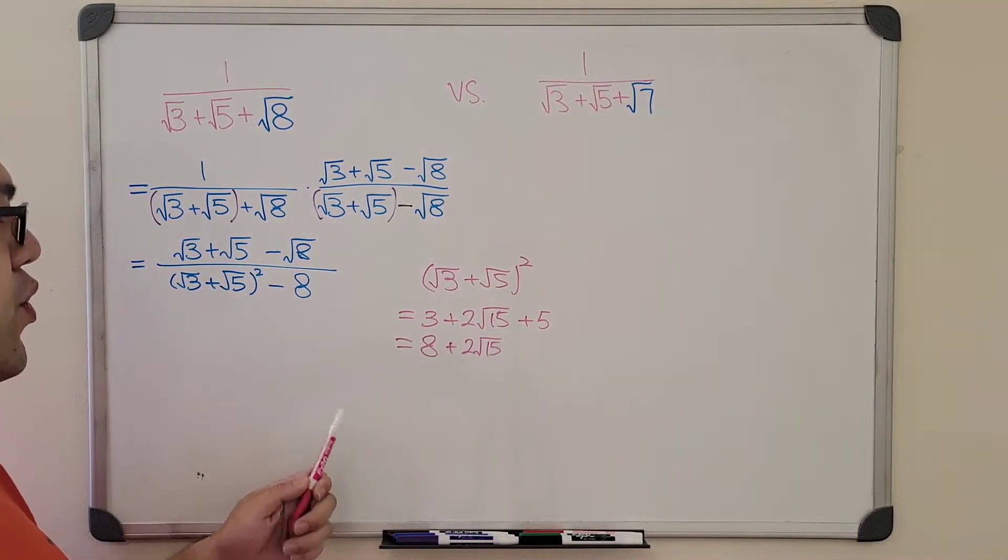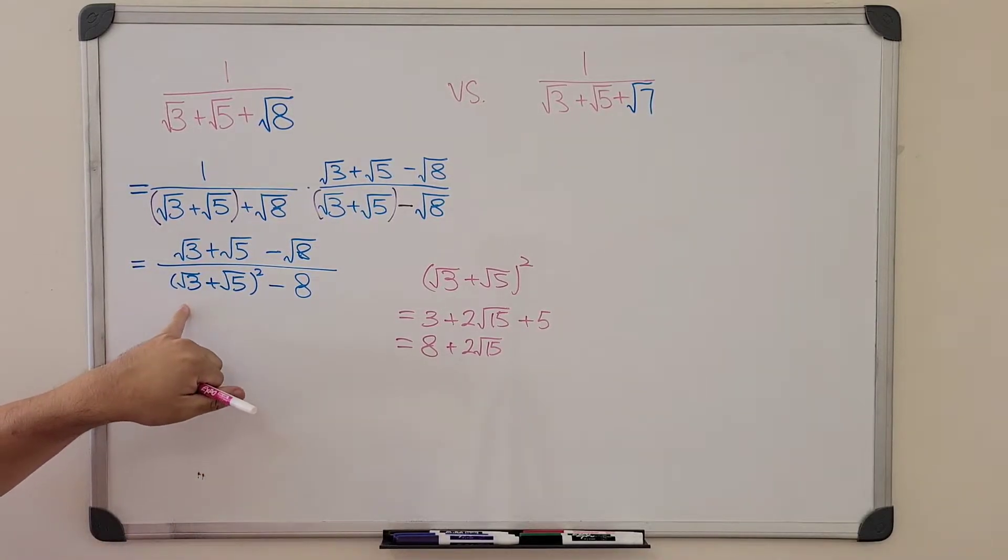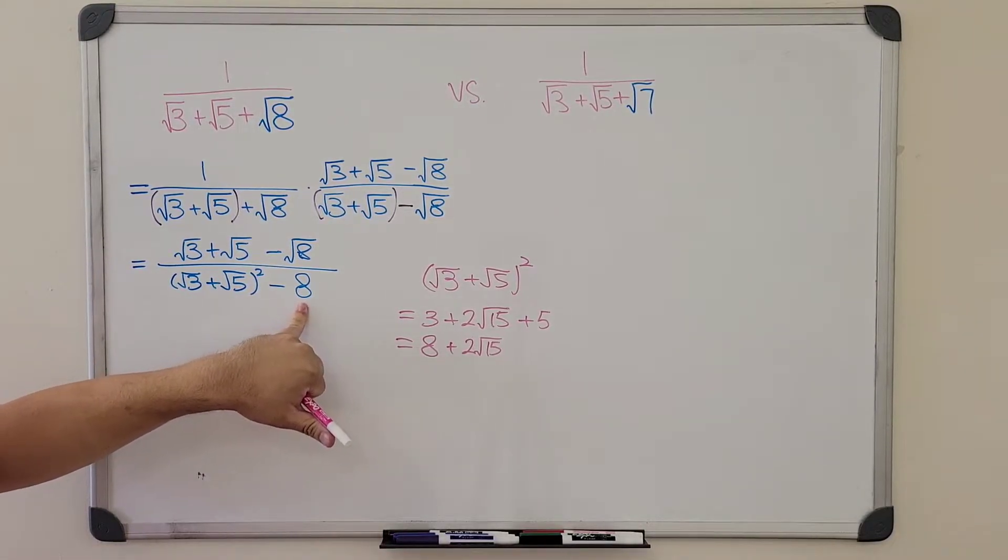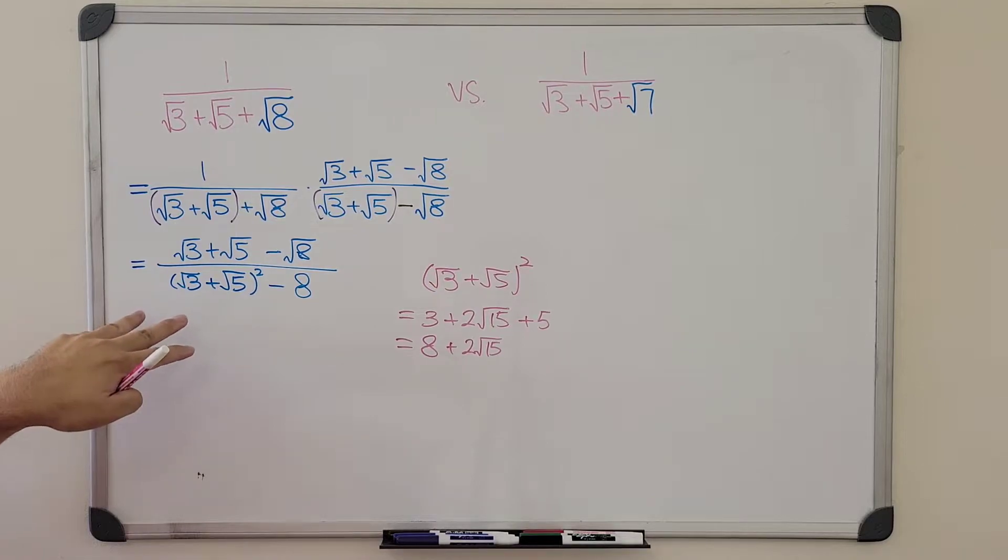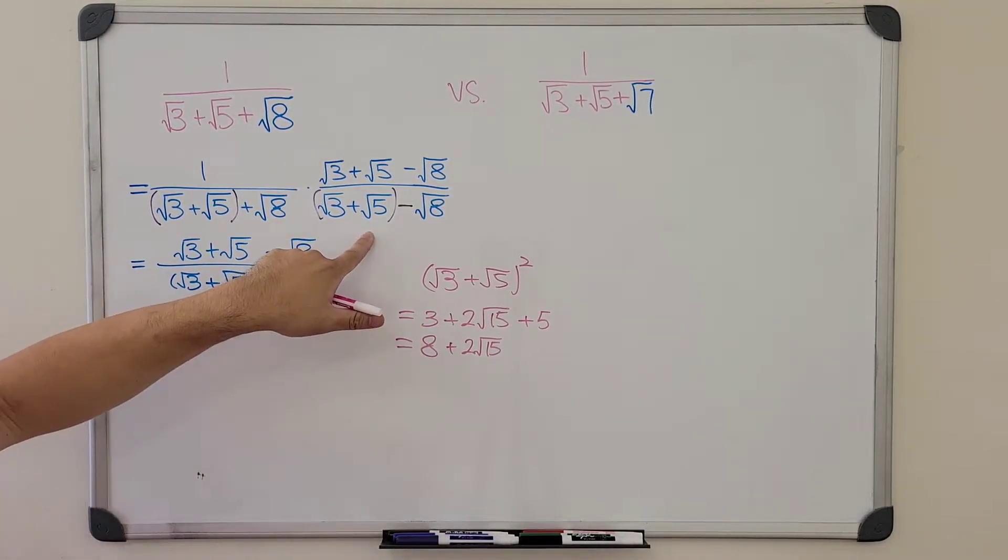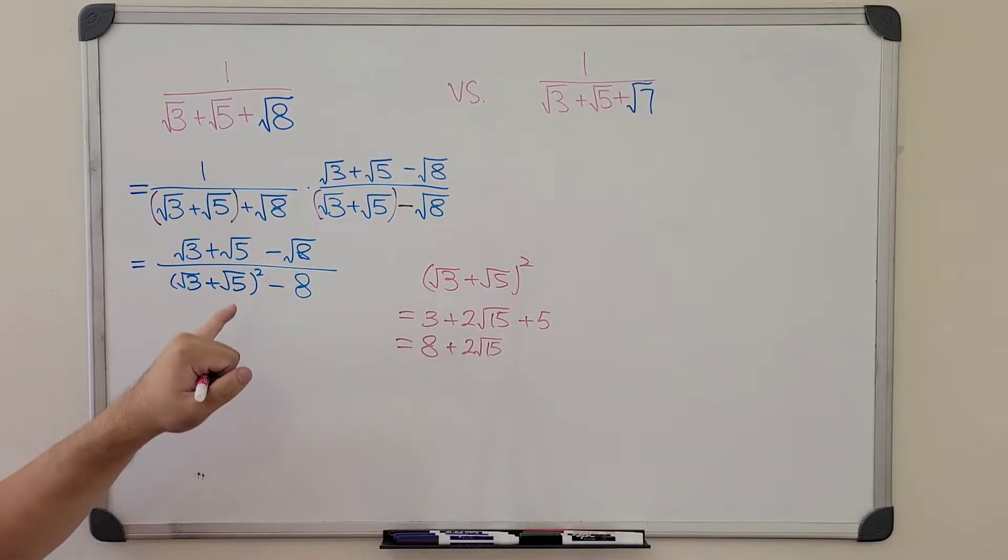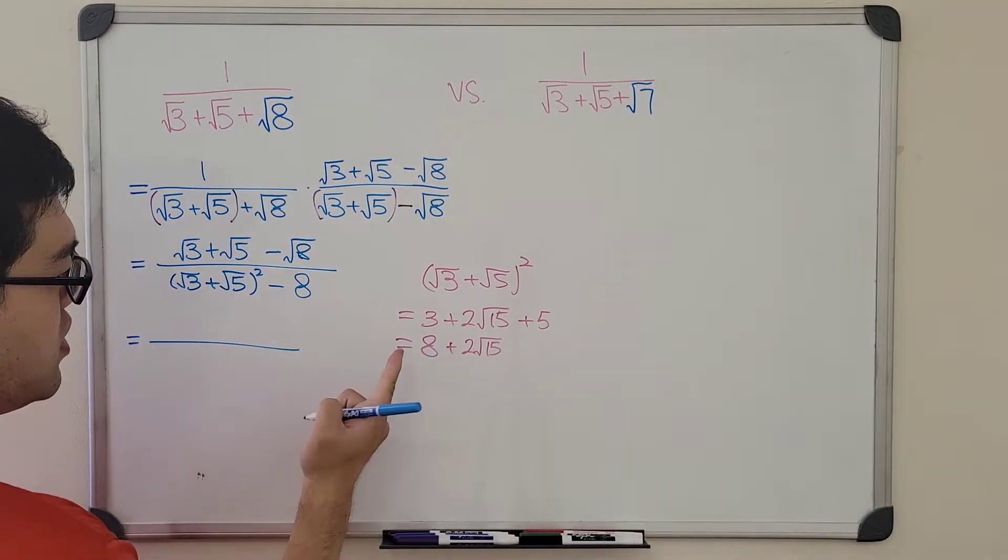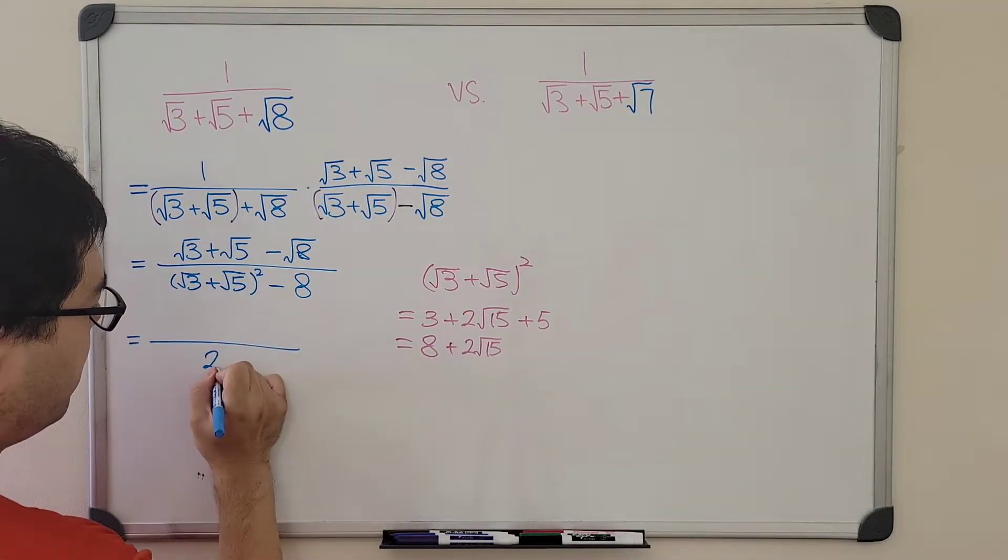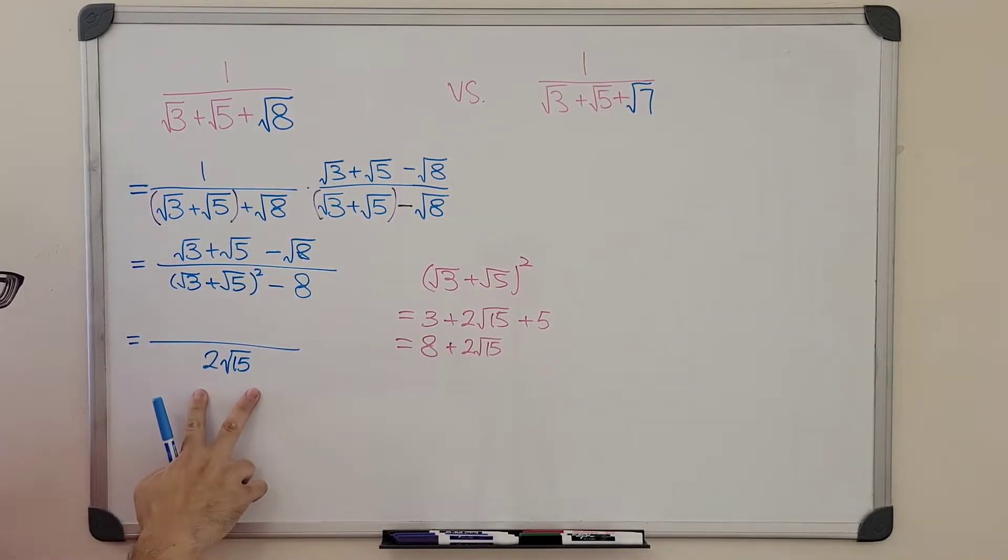And here is why we want to do it this way. Because we see that the 8 will always be able to cancel out with this 8 up here. And this is also a reason why we say that the first expression is easier to rationalize, because as long as we know what is the right expression of radical conjugate, we can always be able to cancel out quickly so that we end up with, for denominator, we end up with 2 times radical 15.